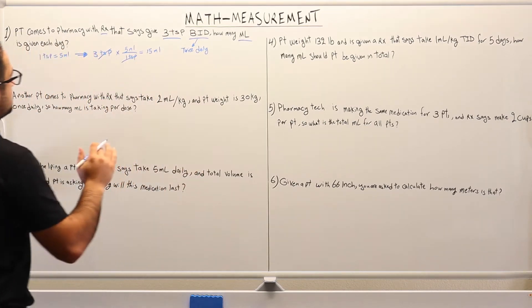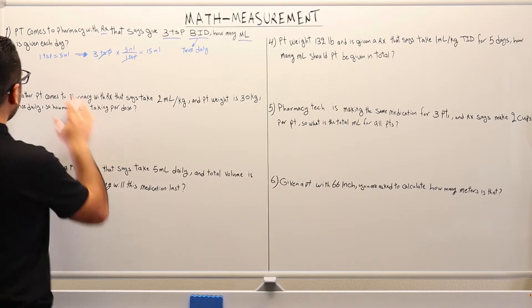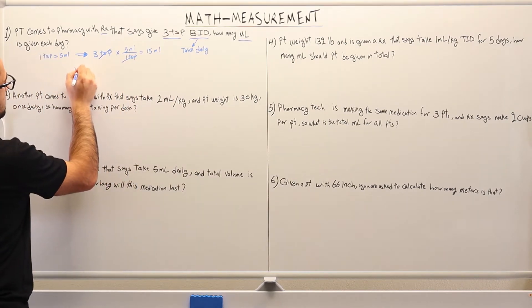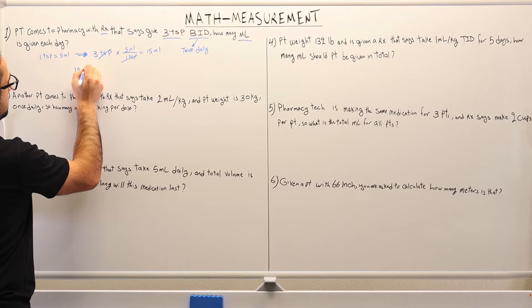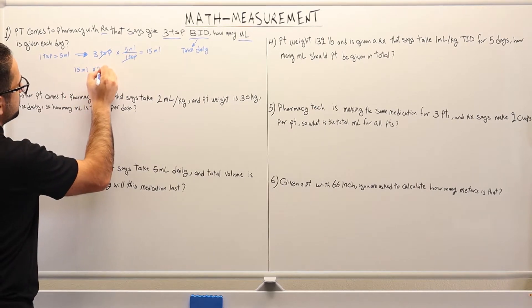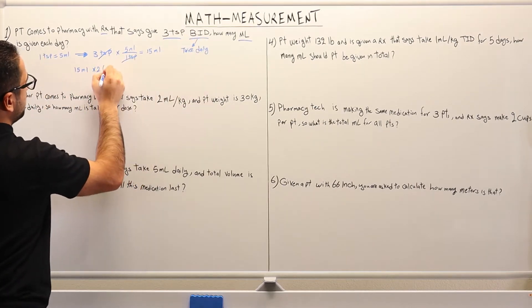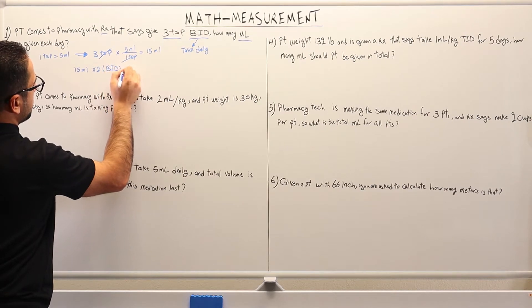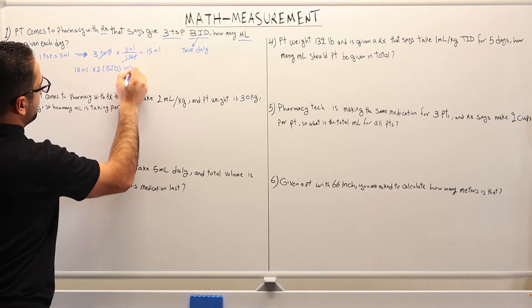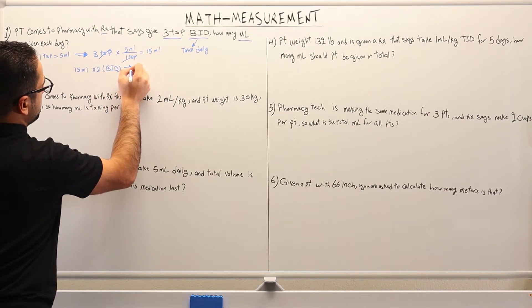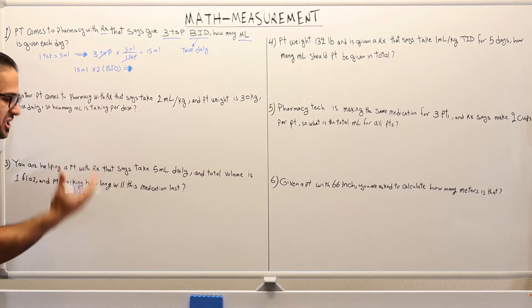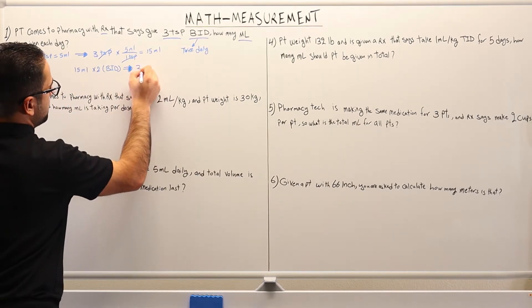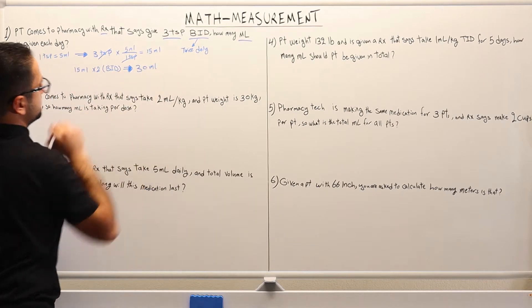This means that we're giving 15 milliliters two times daily. So each day the patient is receiving 15 milliliters times two, which comes from the BID. Therefore, the number of milliliters each day the patient is receiving is 30 milliliters.